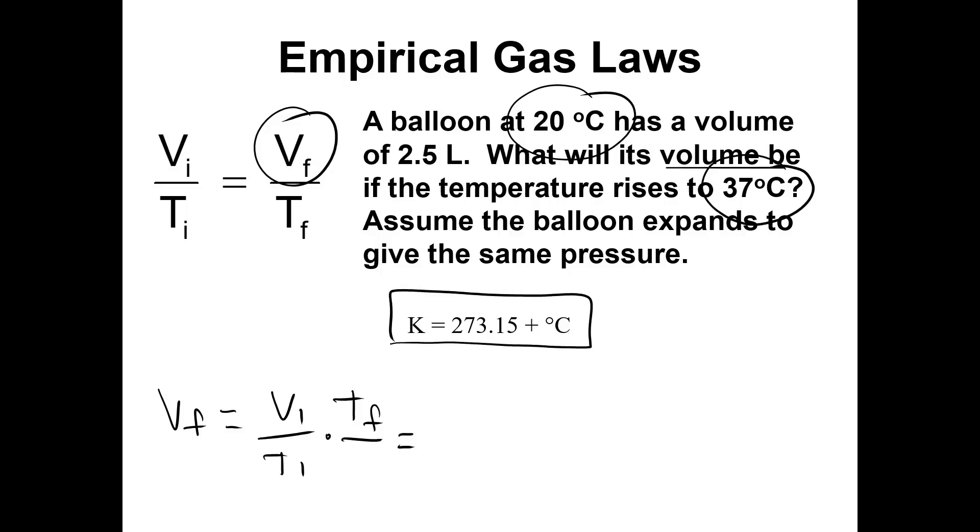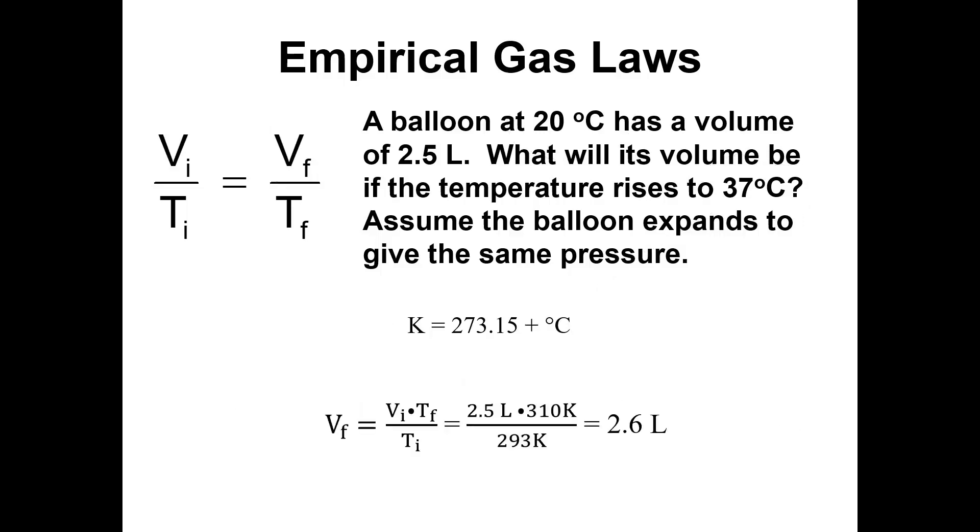If we work a problem here, a balloon at 20 degrees Celsius has a volume of 2.5 liters. What will its volume be if the temperature rises to 37 degrees Celsius? We're solving for VF, so VF is going to be V1 over T1 times T2. Volume 1 is 2.5 liters, that matches the 20 degrees Celsius. You take that 20, so that's going to be 293 Kelvin. The final temperature 37 is going to be 310 Kelvin. Our answer is 2.6 liters. When we come back we're going to put Boyle's Law and Charles' Law together and look at the Combined Gas Law.